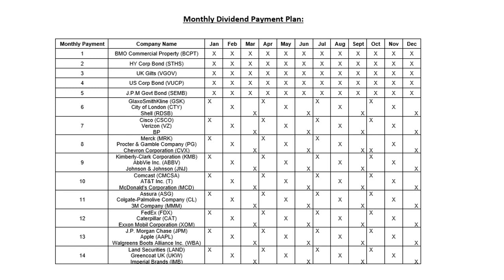Payment twelve: FedEx, Caterpillar and ExxonMobil. Payment thirteen: JPMorgan, Apple and Walgreens. Payment fourteen: Landsec, Greencoat UK and Imperial Brands. From these you can see there is a wide mixture of companies and all their payment dates are on the plan, so you could do your own research and pick your own companies to make up your own monthly payments.